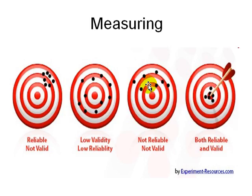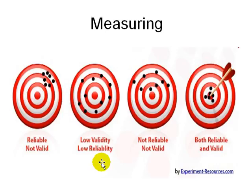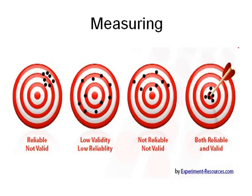When measuring a problem and its solution, there are different cases. Your data might be reliable — all measurements are very close together — but not valid because you are far off from the bullseye. Or your measurements may be all over the place and somewhere in the middle, so you don't know where things stand. Or they can be all over the place and also off the mark. The ideal case is when you are right on target and all your measurements are very accurate. You will need to determine which situation applies to your data, and you will have to figure that out yourself.